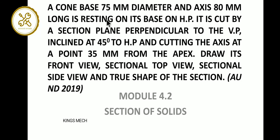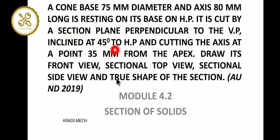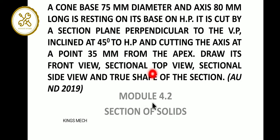A cone with base 75 mm diameter and axis 80 mm long is resting on its base on HP. It is cut by a sectional plane perpendicular to VP, inclined 45 degrees to HP, and cutting the axis at a point 35 mm from the apex. Draw its front view, sectional top view, sectional side view, and true shape of the section.